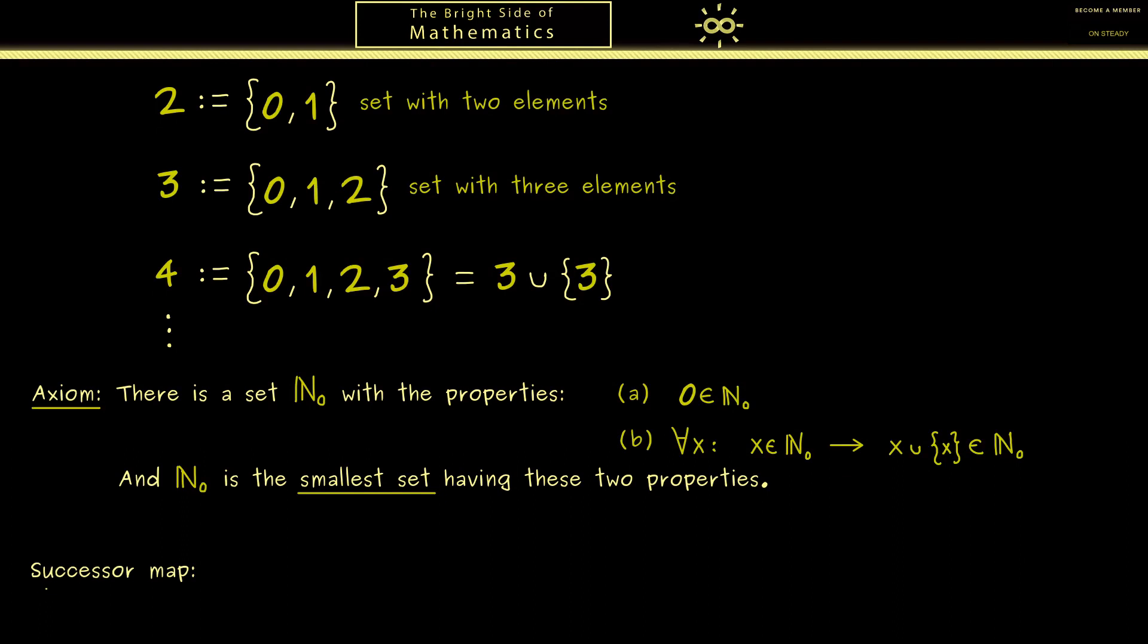Now with the natural numbers we immediately get a map we call the successor map. We denote it with s and it goes from N_0 into N_0. And the definition we already know we send the number x to the union. Because we learned this gives us the successor. For example if we put the number 6 into the map we get out the number 7.